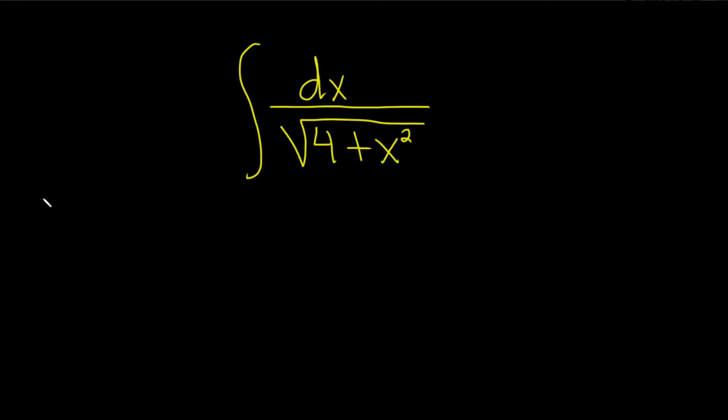So the formula that we're going to try to use in this problem is the following. If you have the integral of du over the square root of 1 plus u squared, this is equal to sinh inverse of u plus our constant of integration capital C. This is the formula that we're going to try to use.